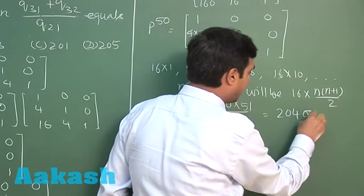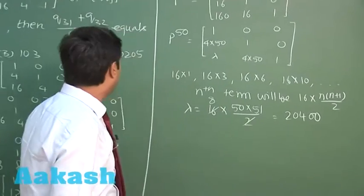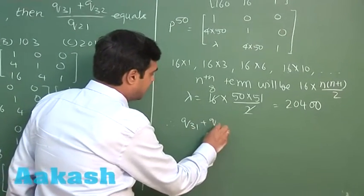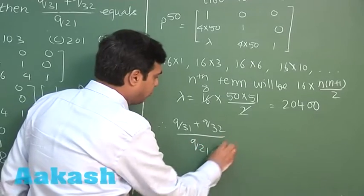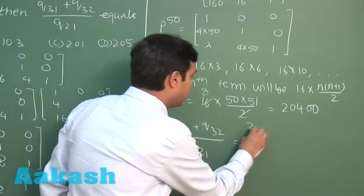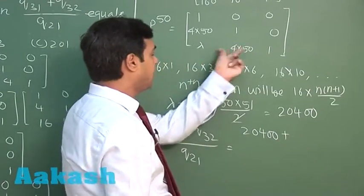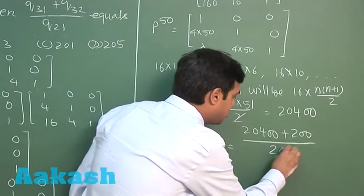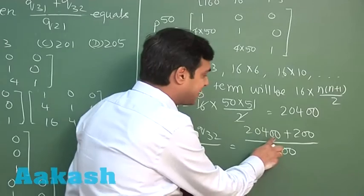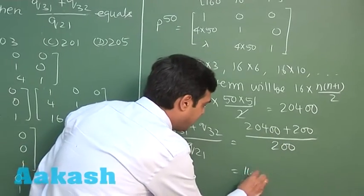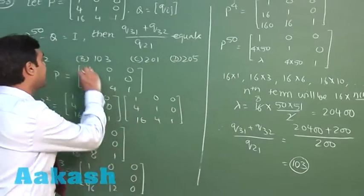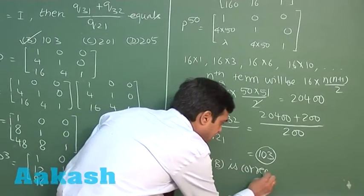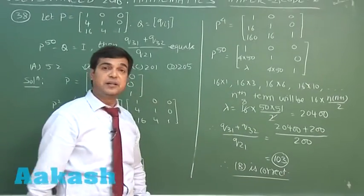Since Q = P^50 minus I, we have Q₃₁ = 20400, Q₃₂ = 200, and Q₂₁ = 200. Therefore, (Q₃₁ plus Q₃₂) divided by Q₂₁ equals (20400 plus 200) divided by 200 = 20600/200 = 103. From the given options, option B is the correct one. A good problem from determinants and matrices — let's move to the next one.